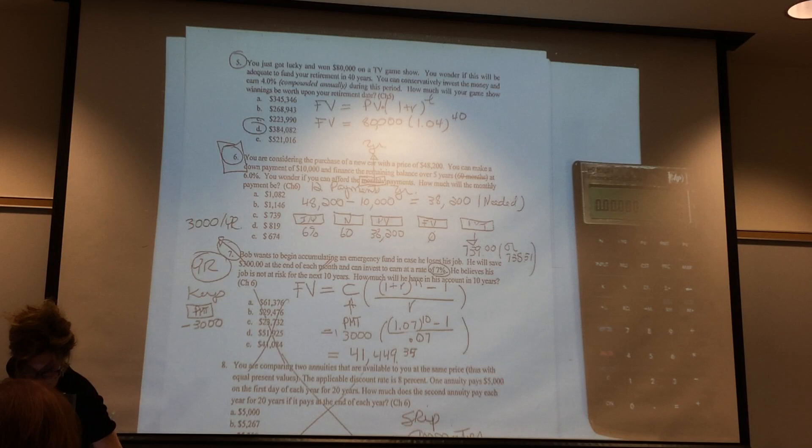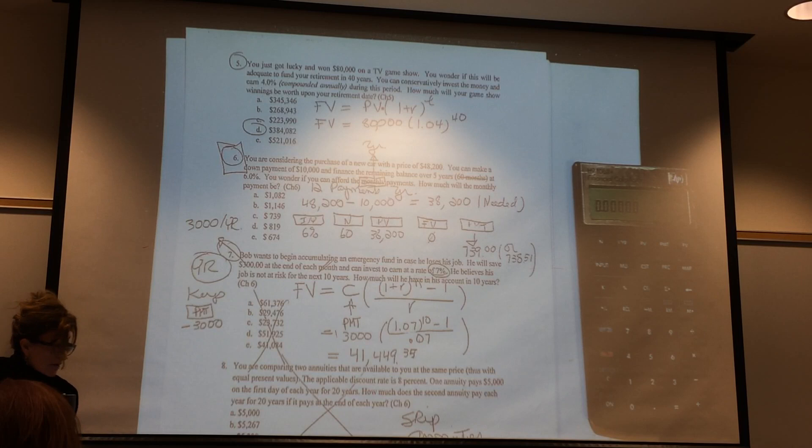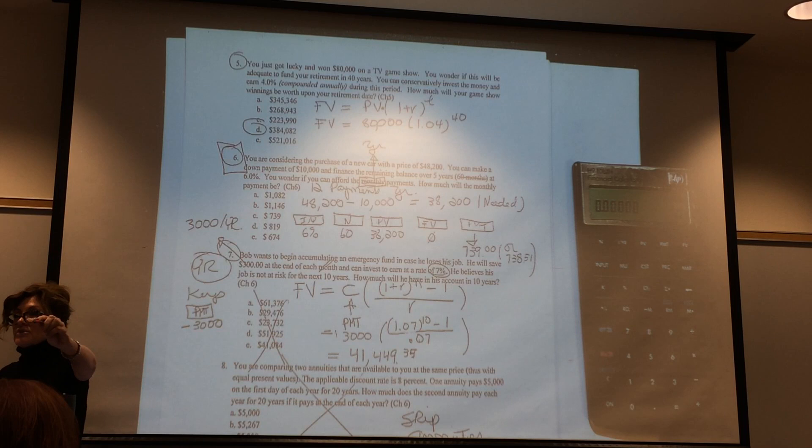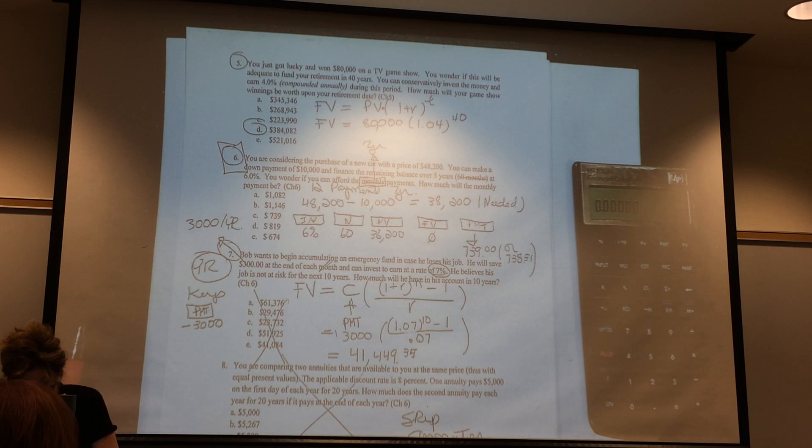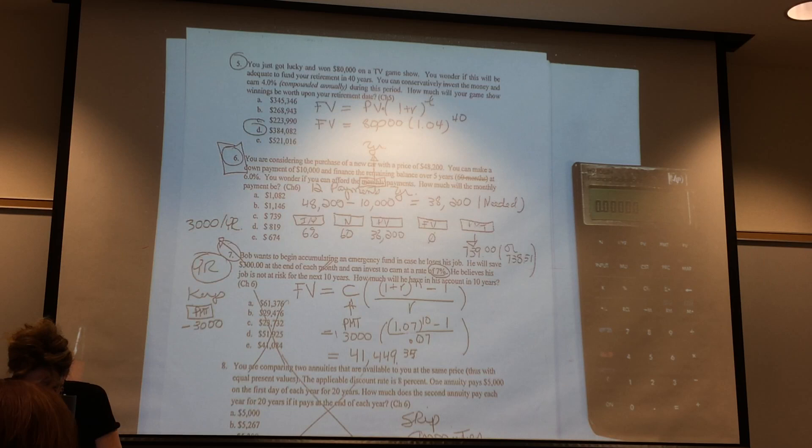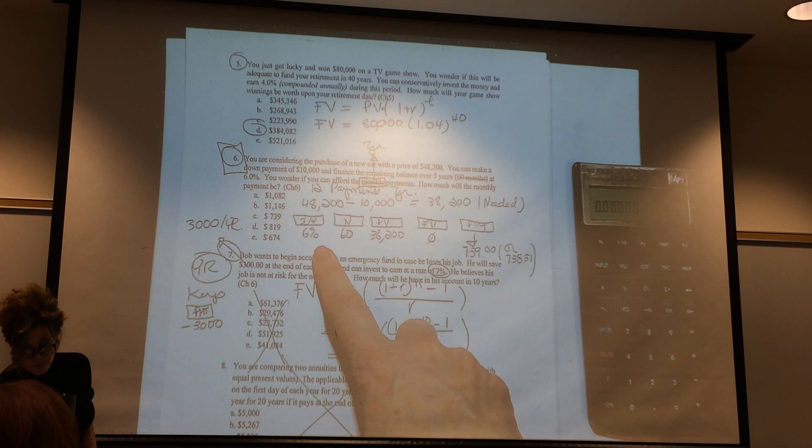You're considering the purchase of a new car with a price of $48,000. Who has a question? No, no. I was just a question. I'm sorry. I can't do it anymore. Because I'm listening to Weeknd all the time too loud. It's his fault. You're considering the purchase of a new car with a price of $48,200. You can make a down payment of $10,000 and finance the remaining balance over five years or 60 months at 6%. You're wondering if you can afford the monthly payment, because that's how everybody buys a car or house. How much will the monthly payment be?